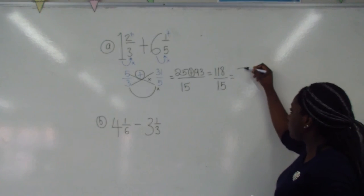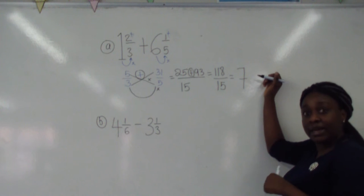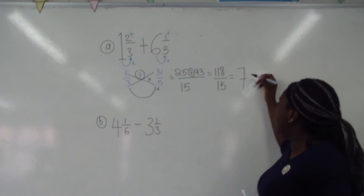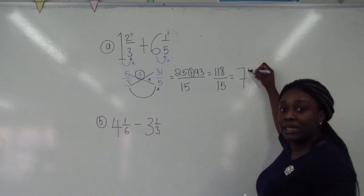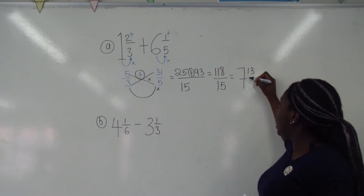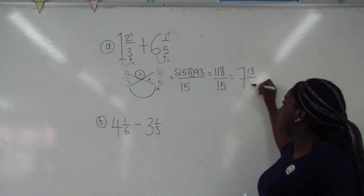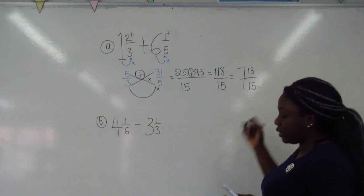That is 7. If you're not sure, you can check that out on a piece of paper. 15 goes into 118 seven times and we have a remainder of 13. Remainder always goes on the top and your bottom number will stay 15.